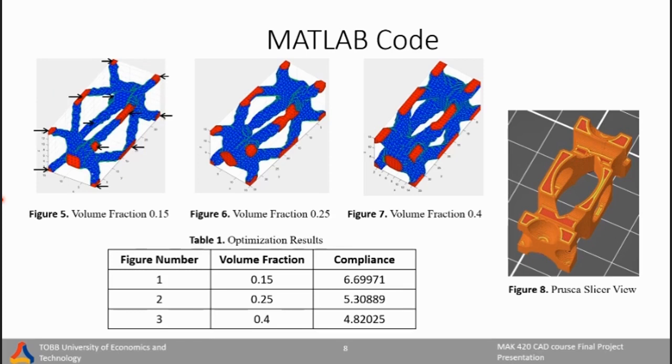As you can see in Figures 5, 6, and 8, different volume fractions are used. And in Table 1, the compliance values for these fraction values are given. As we expected, when we use more material, the compliance values are decreased. Then we decided to use volume fraction of 0.25 because we wanted our Avionics Bay to be durable but also to be lightweight as well.